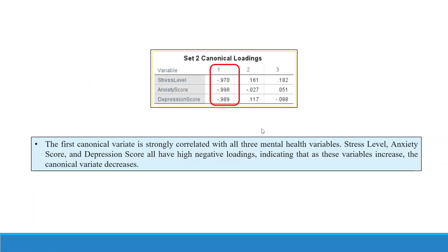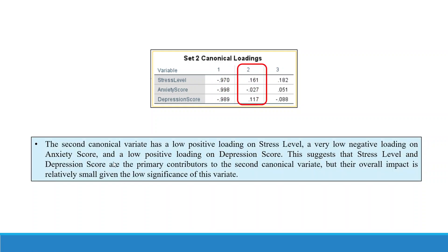Now for Set 2 canonical loadings — the mental health variables. The first canonical variate is strongly correlated with all three mental health variables: stress level, anxiety score, and depression score, all with negative loadings, indicating that as these variables increase the canonical variate decreases. The second canonical variate has a low positive loading on stress level, a very low negative loading on anxiety score, and a low positive loading on depression score. This suggests that stress level and depression score are the primary contributors to the second canonical variate, but their overall impact is relatively small as values are less than 0.5.